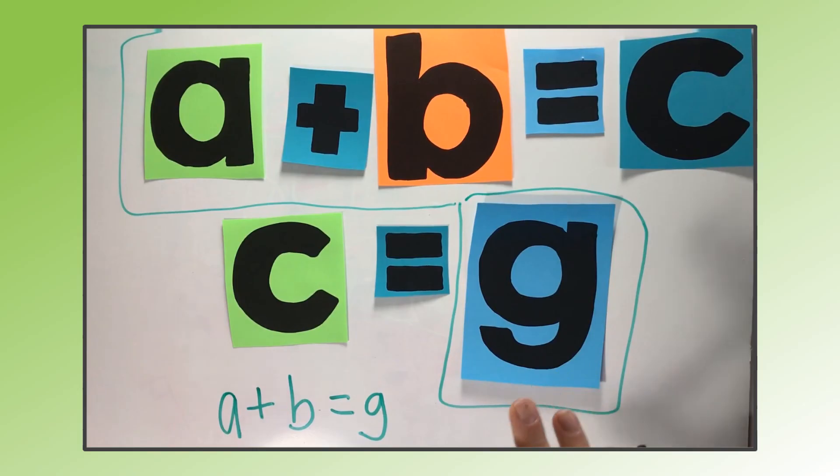So sometimes, like in this particular case, we can use substitution or transitive property as justification for the same line. But that's not always the case. Only when an entire side of the equation matches.